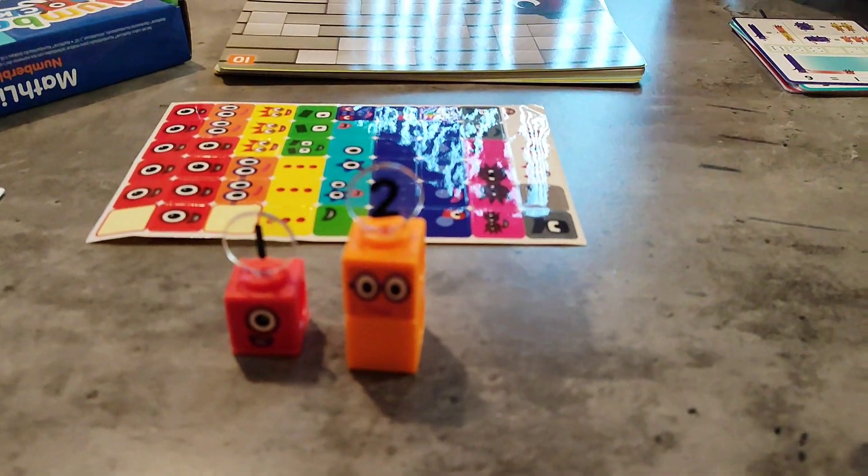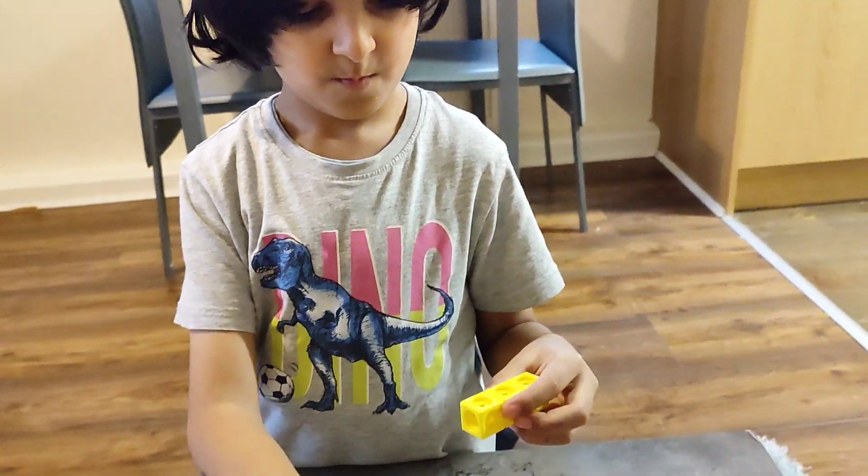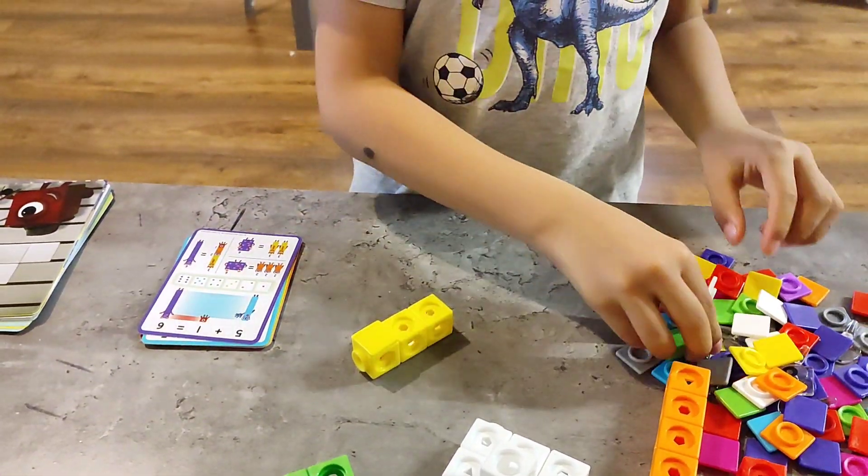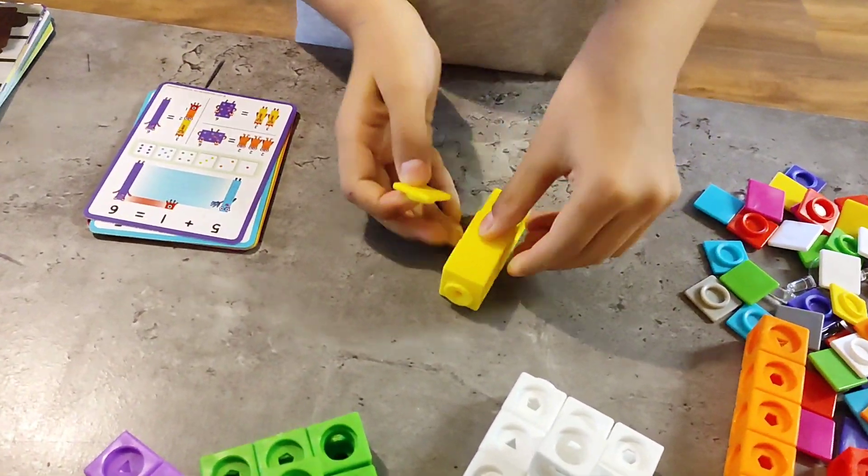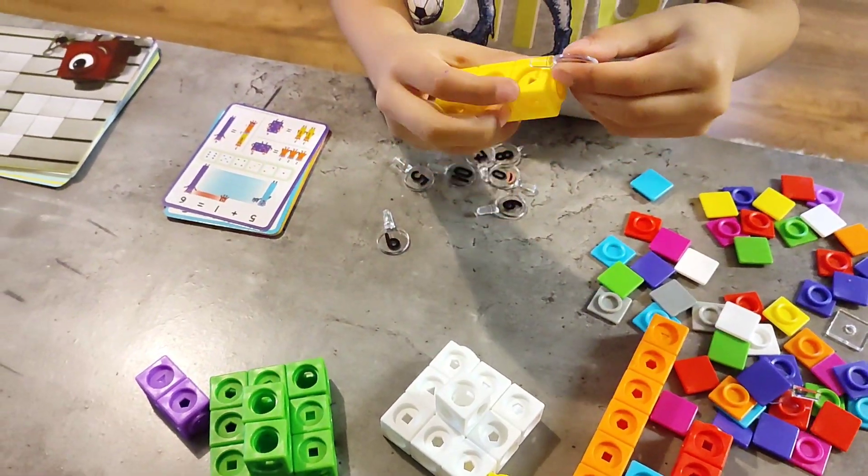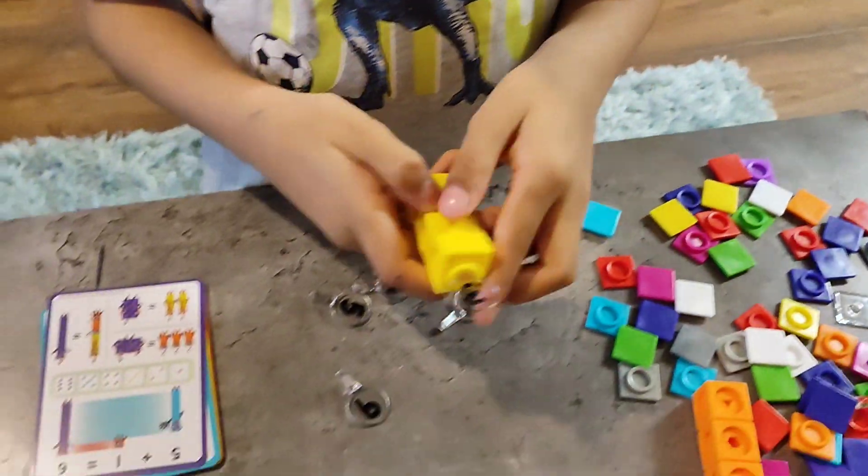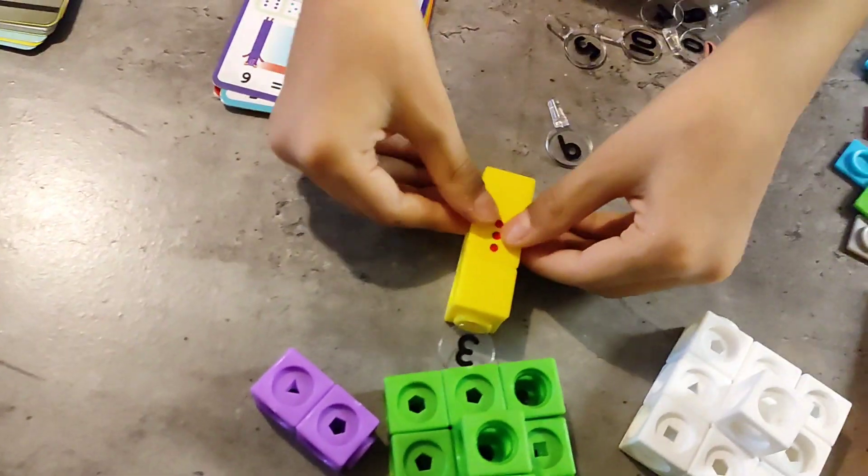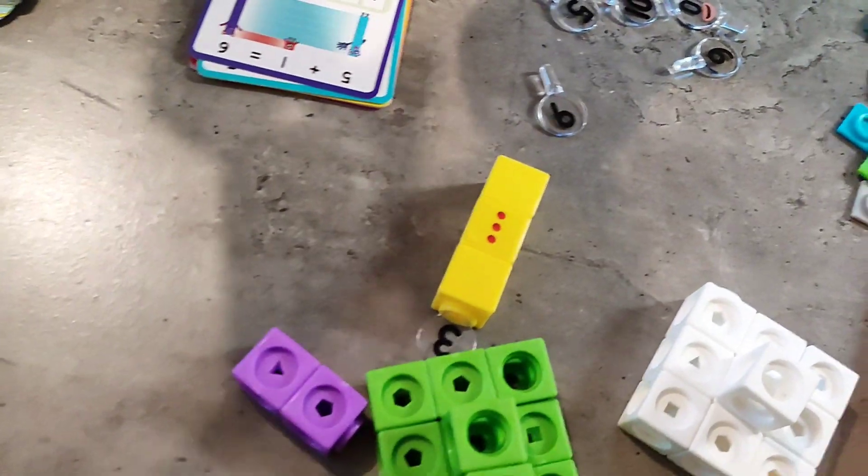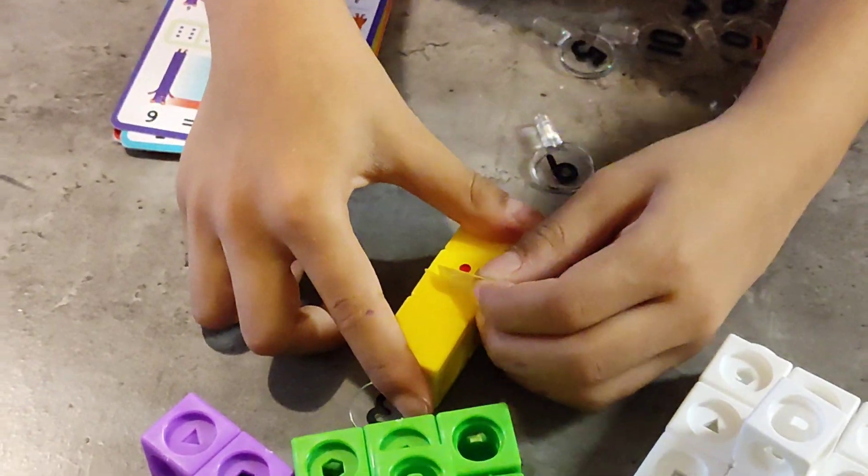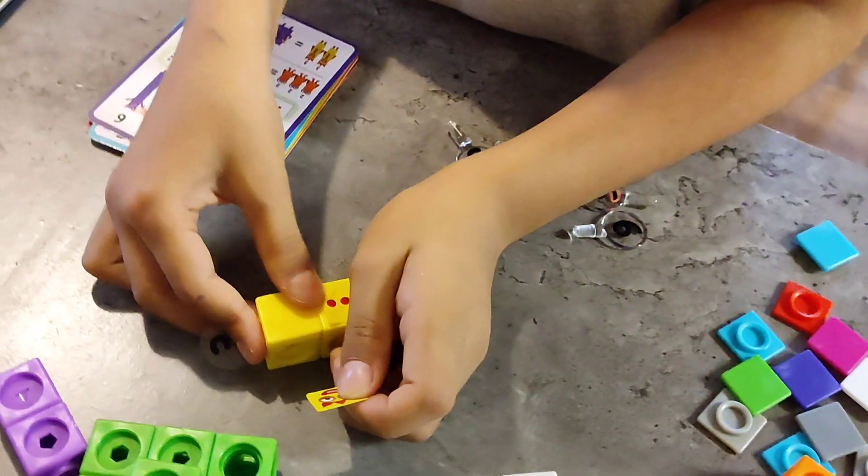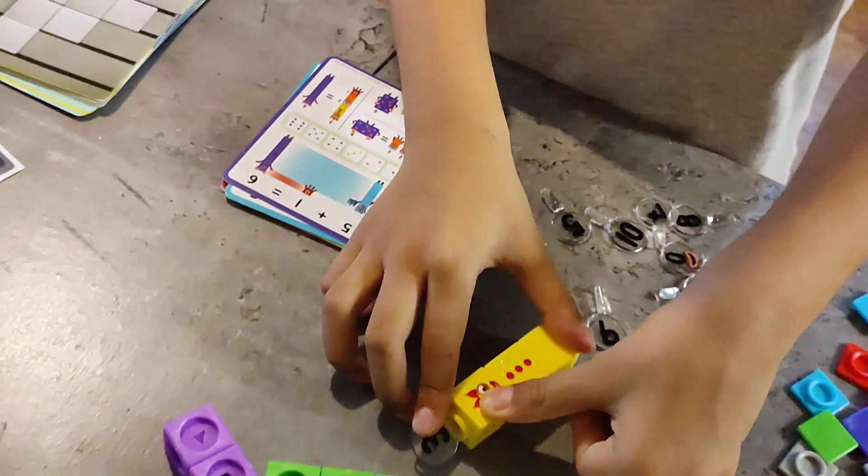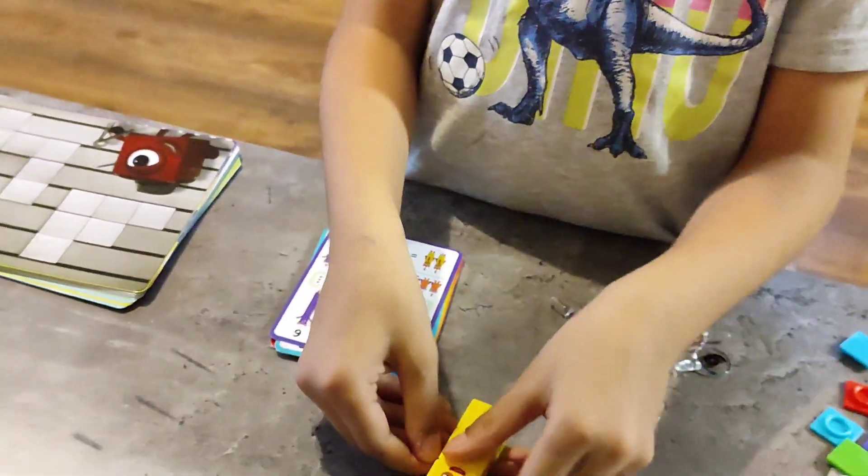Now it's number block 3. Okay. Stickers. Now I have to put it on. Here. Yeah. Number 3.